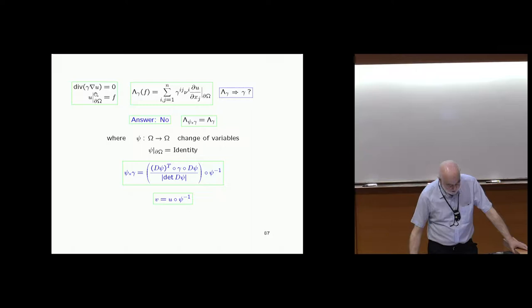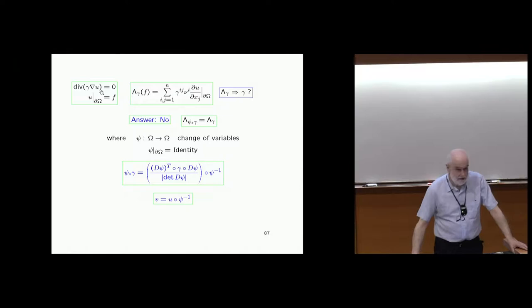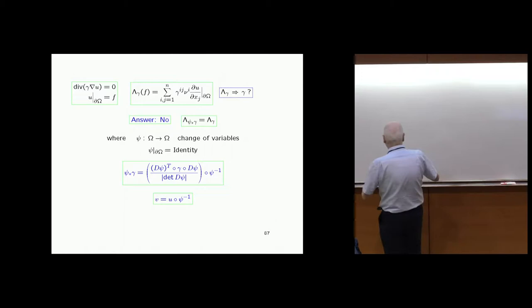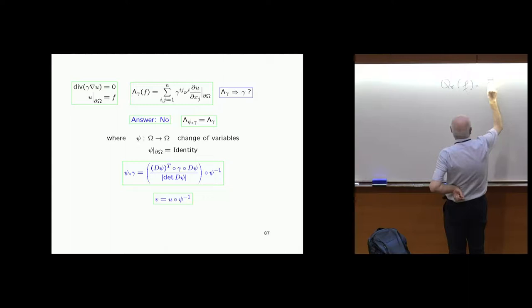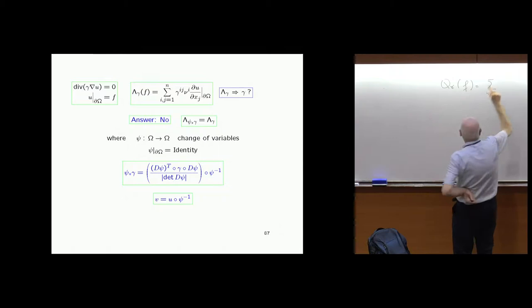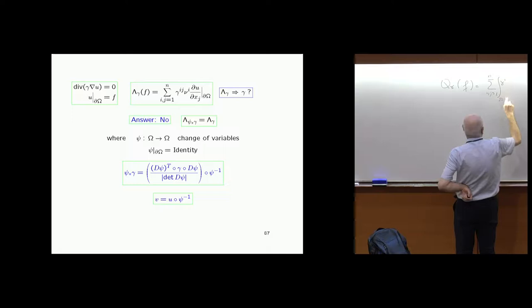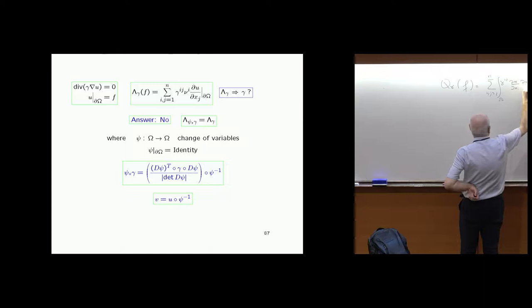You compose your solution with the inverse change of variables and look at the new equation it satisfies — it is similar, with gamma replaced by the push-forward. Another way to see it: we have the quadratic form, which in the anisotropic case is the integral over omega of gamma_ij times du/dx_i times du/dx_j, where u solves the equation on omega with u equal to f at the boundary.